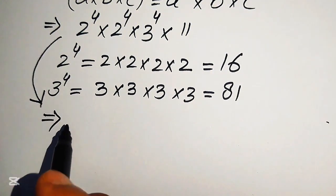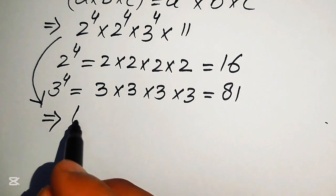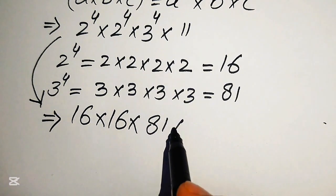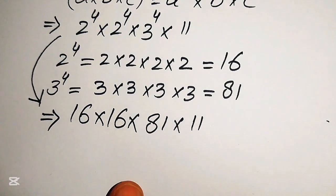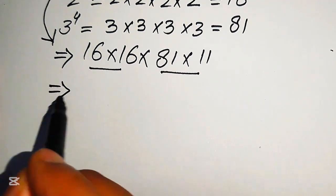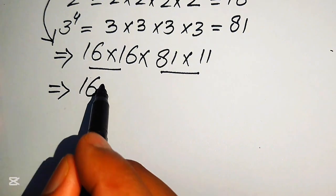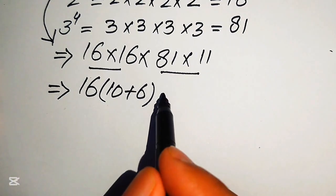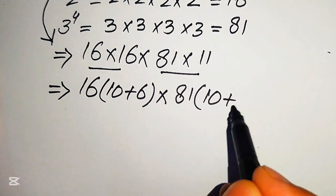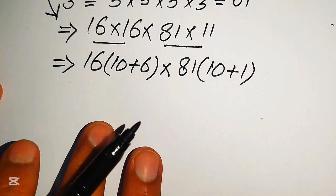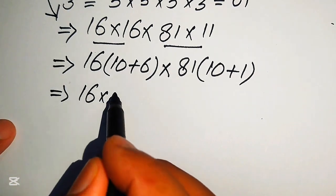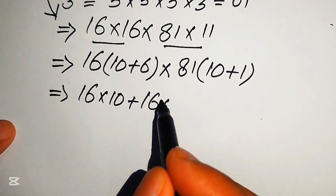The expression now becomes 16 multiplied by 16, multiplied by 81, multiplied by 11. To multiply these without a calculator, we first break 16 as 10 plus 6 and multiply by 81, and break 11 as 10 plus 1. Distributing gives us 16 multiplied by 10 plus 16 multiplied by 6 for the first pair.